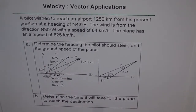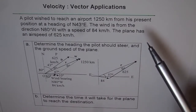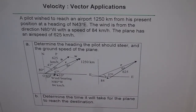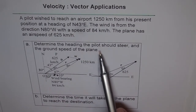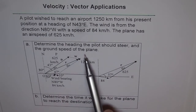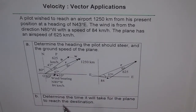Velocity Vector Applications. A pilot wishes to reach an airport 1250 km from his present position at a heading of 43 degrees east of north. The wind is from the direction of 80 degrees west of north with a speed of 84 km per hour. The plane has an airspeed of 625 km per hour. Part A: determine the heading the pilot should steer and the ground speed of the plane. Part B: determine the time it will take for the plane to reach the destination.